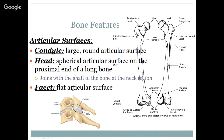Bone features: articular surfaces are places where bones come together. They're often covered with cartilage to reduce friction and create a cushion. The condyle is a large round articular surface — typically on the distal portion of bones. The head is the spherical articular surface on the proximal end of a long bone, and it joins with the shaft of the bone at the neck. A facet would be a flat articular surface, such as between your vertebrae.